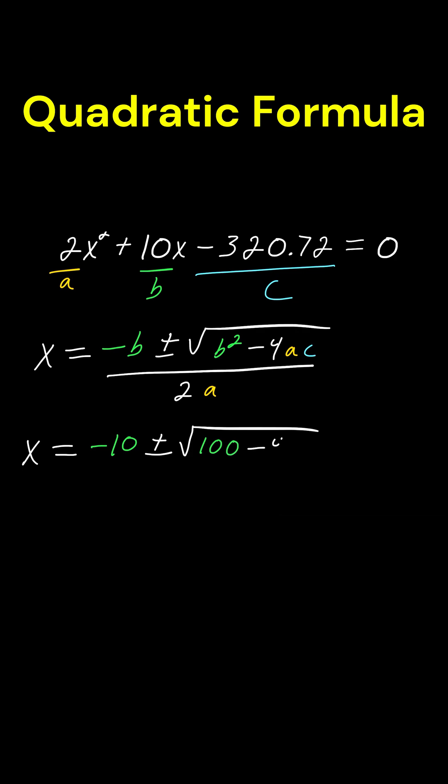minus 4 times a, a is 2, and times c. c is going to be negative 320.72, so I'm going to write that in parentheses. And remember, all of this is going to be divided by 2a.